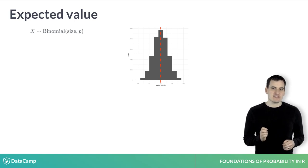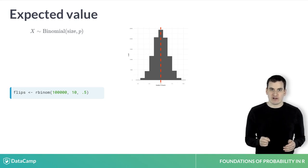Let's try to find the expected value of the binomial distribution with size 10 and probability 0.5. We can't draw an infinite number of values, but we can draw a lot of them. As you've done in the exercises, we can use rbinom to simulate 100,000 draws with size 10 and probability 0.5, then use the mean function to take the average of those draws.